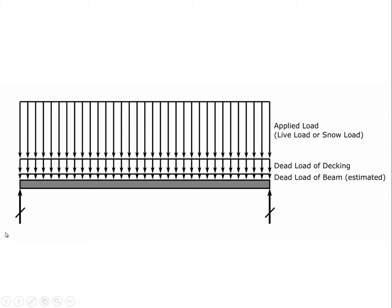Typically we design a building by looking at applied loads like live load or snow load, and those of course go on the top of whatever member we're sizing. We then add dead load of decking, and typically we also add the dead load of the beam or spanning member itself, which initially may be estimated because we don't know what it is until we've sized it. In computer simulations, we guess a size and the computer does the analysis and tells us whether it's right.